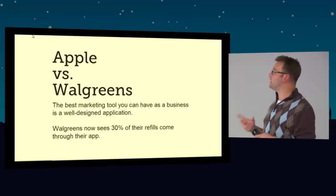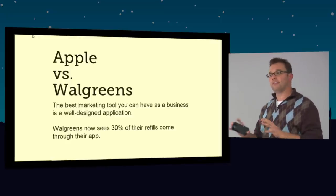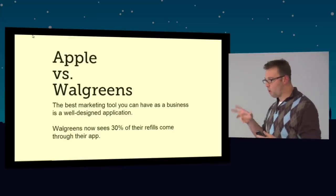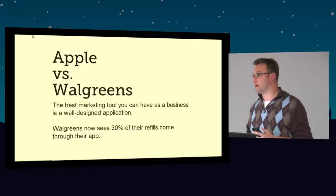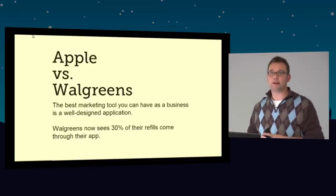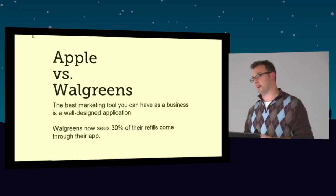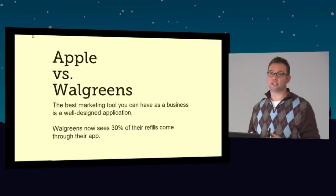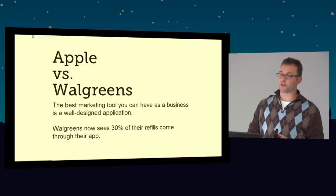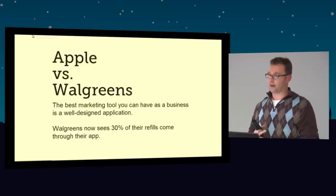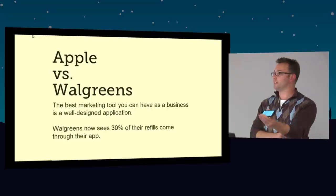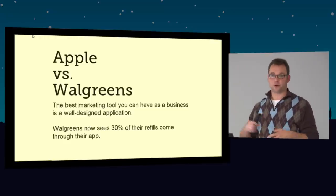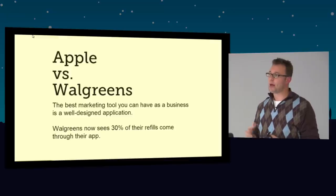If you look at one specific Apple product versus one specific Walgreens product, the titles have actually turned. Walgreens sees about 30% of the refills for their prescriptions come in through the mobile app. They've made it simple. You open up the app, you scan the barcode on your bottle, and in an hour you go to your chosen Walgreens and pick up your prescription. It's very easy. People love it.